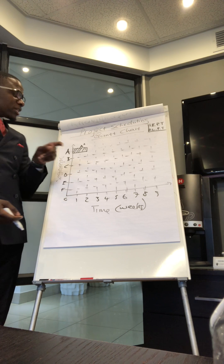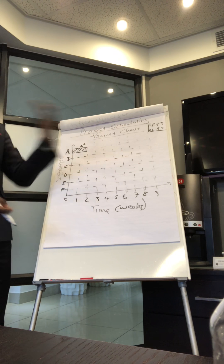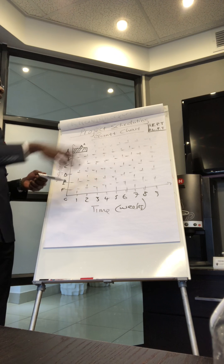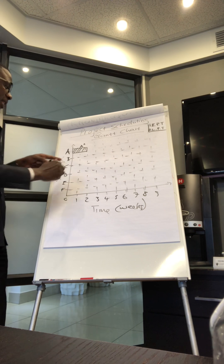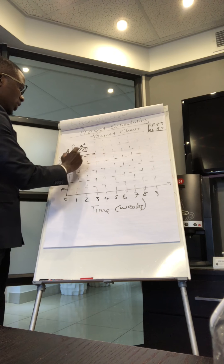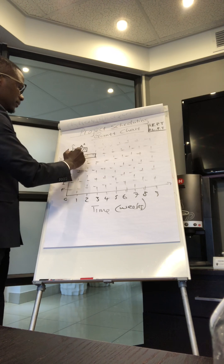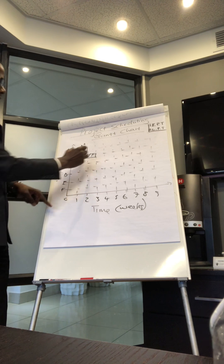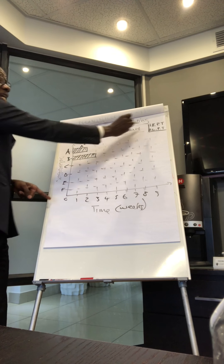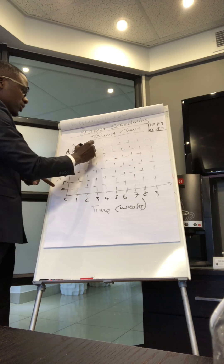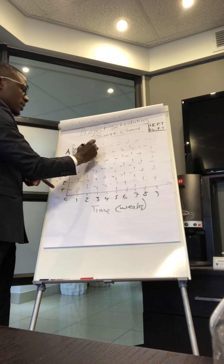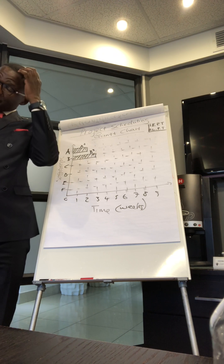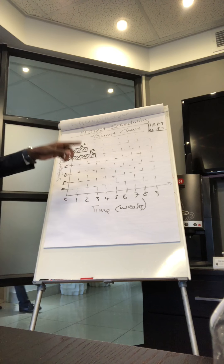Then we have Activity B, which also does not depend on any activity for it to start, and takes three weeks. Remember, a Gantt chart is a bar graph. We draw three weeks — it doesn't depend on anything so it starts at the earliest possible time, which is zero. We call this Activity B taking three weeks.